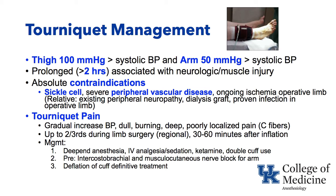Tourniquet pain is another issue. Up to two-thirds of patients during limb surgery under regional anesthesia will have tourniquet pain, occurring about 30 to 60 minutes after inflation — a gradual increase in blood pressure with dull, burning, deep, poorly localized pain carried through C fibers. Management is often to deepen anesthesia, provide increased IV analgesia or sedation, or occasionally convert to general anesthesia. Ketamine in small doses, double cuff use, and intercostal brachial musculocutaneous nerve block for arm cuffs can help. The definitive treatment is to take the cuff down.